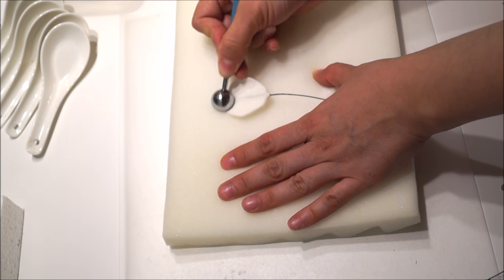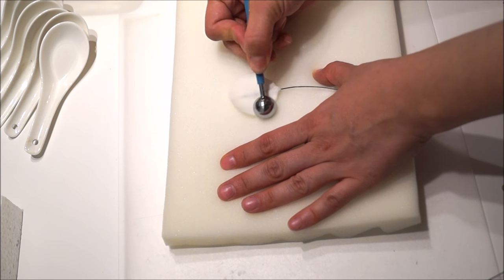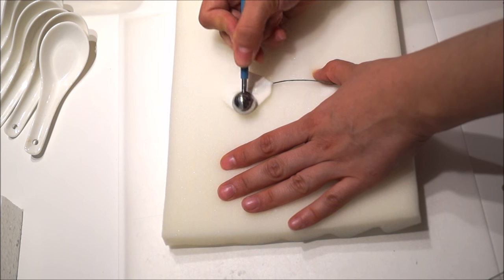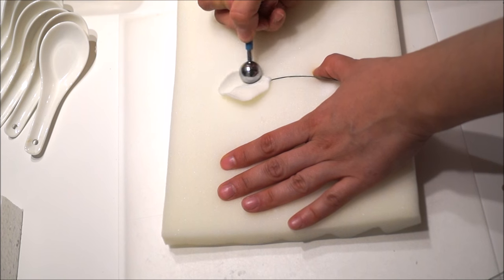Then, place each petals on top of a spoon and let it dry for at least 24 hours. The crease of the spoon will give a natural look to the petals.